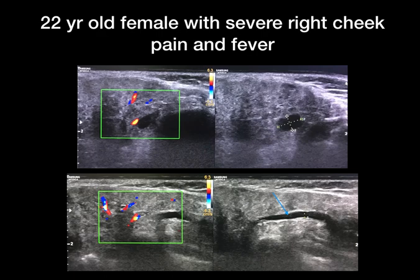USG of the right parotid gland is seen here. On the axial section, you can see the entire parotid gland is heterogeneous in ecotexture and slightly edematous.